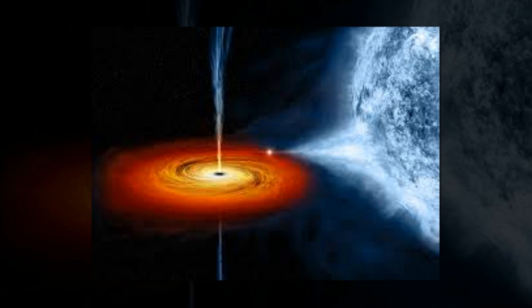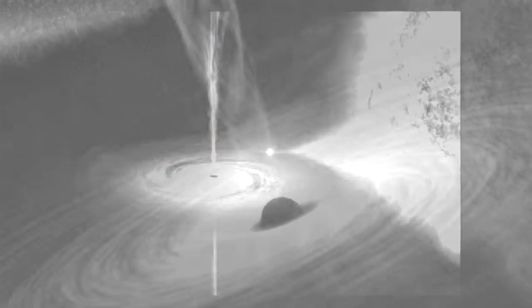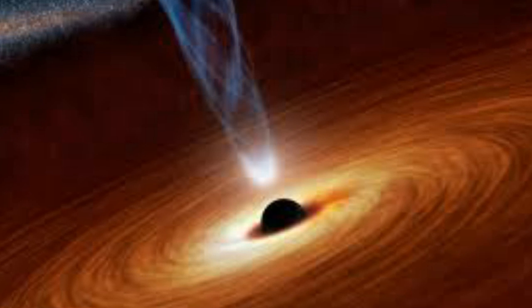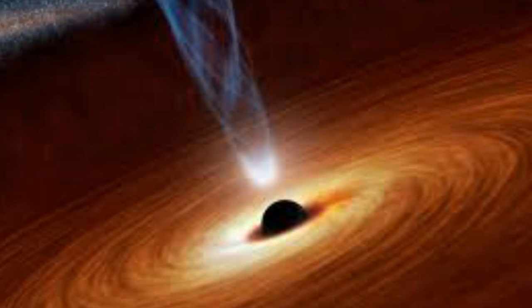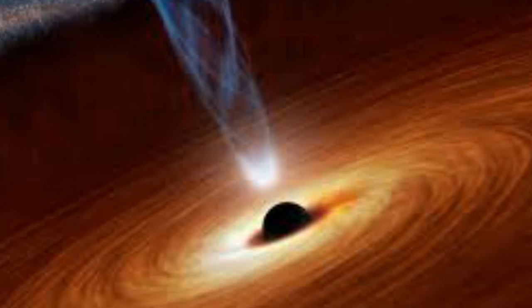It's not really known how these jets are formed, but according to one hypothesis, as material falls towards the black hole, it is superheated and ejected along the black hole's spin axis, confined to a narrow, conical jet by strong magnetic fields.